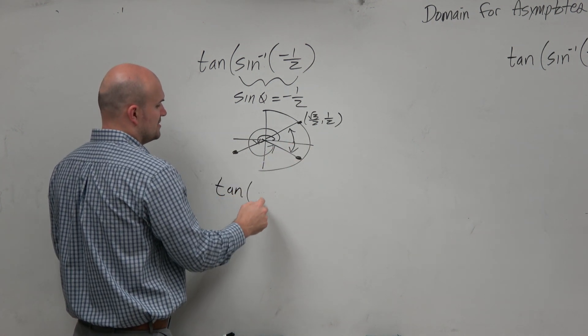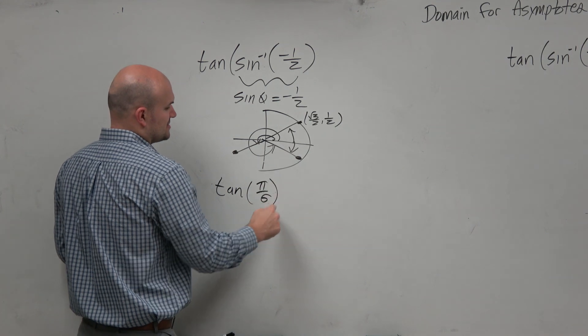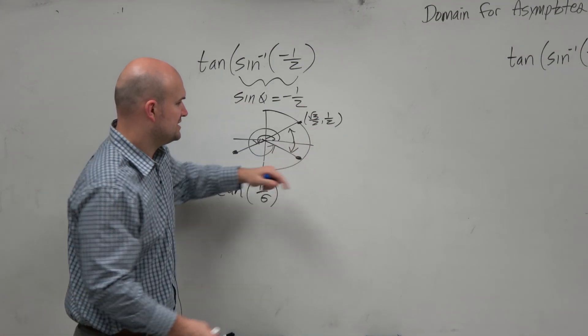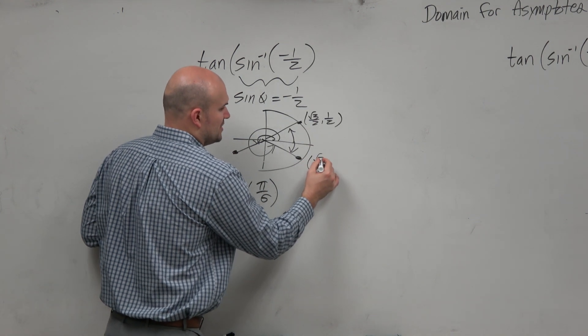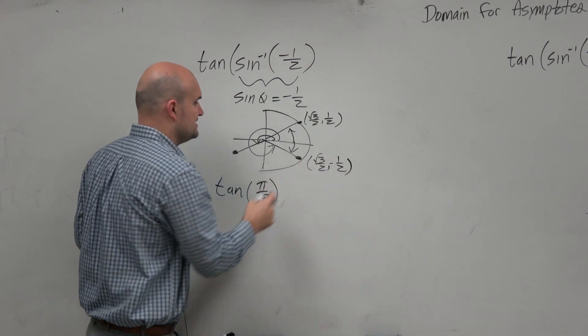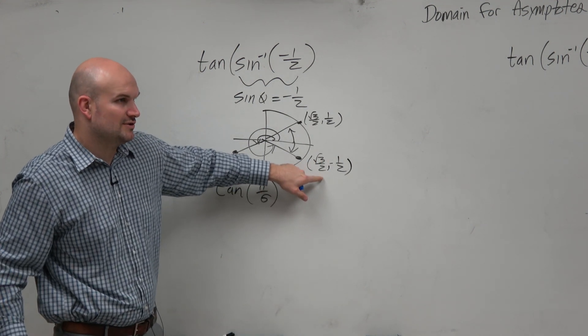If this point is reflected, we have square root of 3 over 2 comma negative one-half. Then the tangent is the y-coordinate over the x-coordinate.